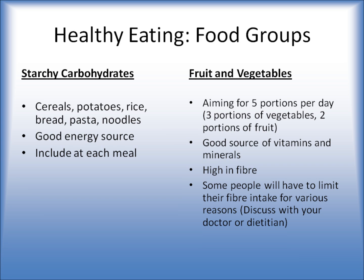Fruits and vegetables — when you're in remission, it's really great to try and get in as many as you can, aiming for five a day. We recommend three portions of vegetables and two portions of fruit. A portion is about 80 grams, or an amount that can fit into the palm of your hand. They're a good source of vitamins and minerals and are high in fibre as well. Some patients may need to limit their fibre intake for various reasons, but please discuss that with your doctor or dietitian.